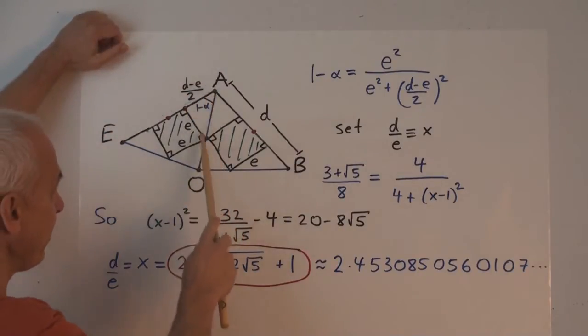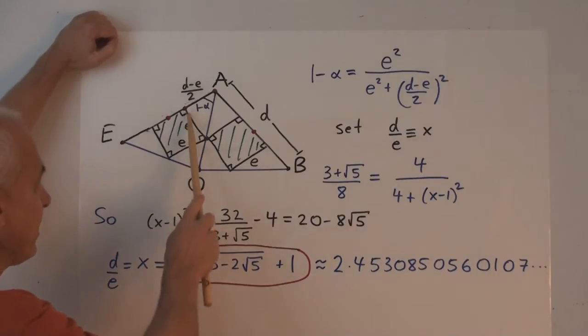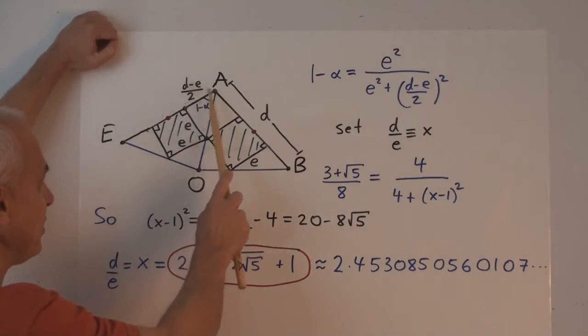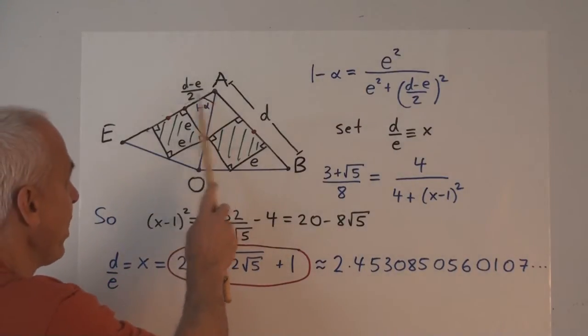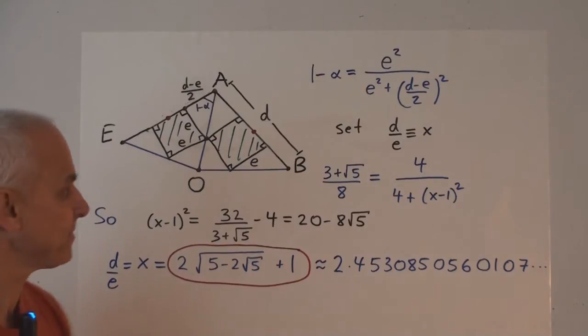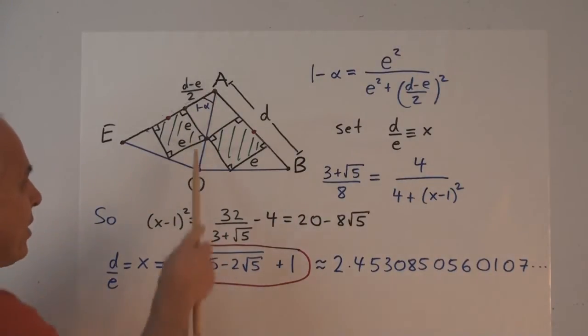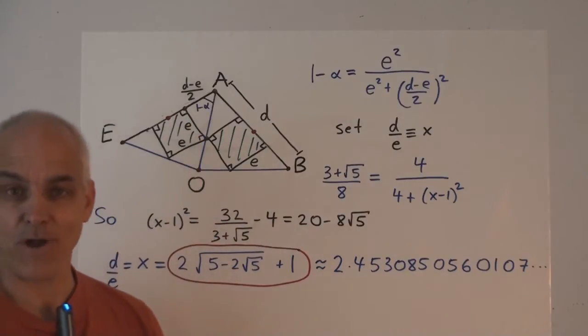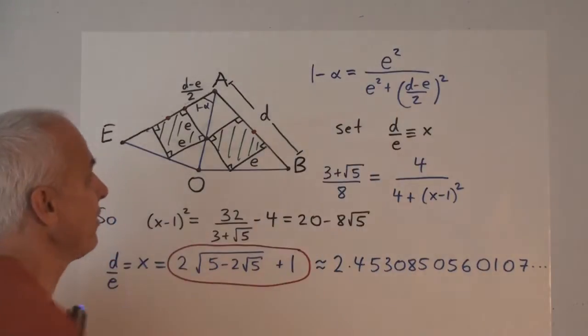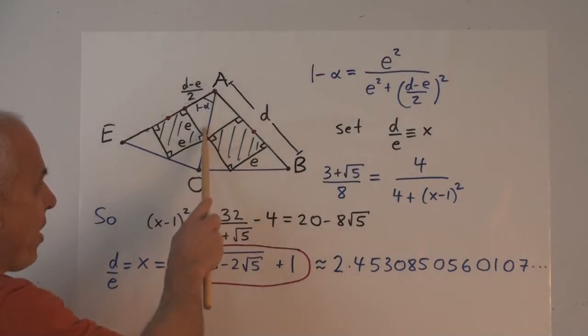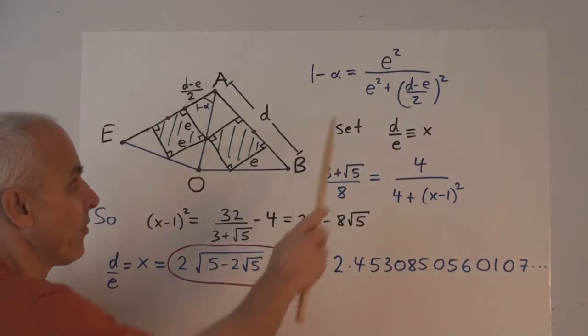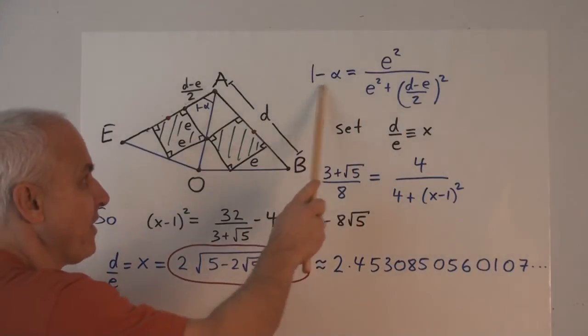So have a look at this triangle right here, which is a right triangle. One of its sides is length E. The other side has length D minus E over 2. And that spread right there is 1 minus alpha, because if we drop a perpendicular to here, then this spread was alpha. So this is just 1 minus alpha. In this triangle, 1 minus alpha is the quadrants of the opposite side divided by the quadrants of the hypotenuse. E squared divided by, well this hypotenuse, its quadrants by Pythagoras will be E squared plus D minus E over 2 all squared.